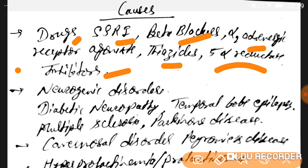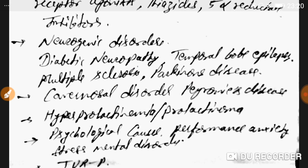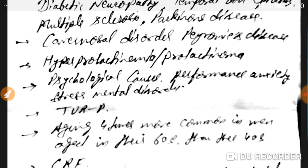The second important cause is neurogenic disorders. Diabetic neuropathy is a complication of diabetes that causes erectile dysfunction. Other neurogenic causes include temporal lobe epilepsy, multiple sclerosis, and Parkinson's disease, which becomes more prevalent with increasing age.